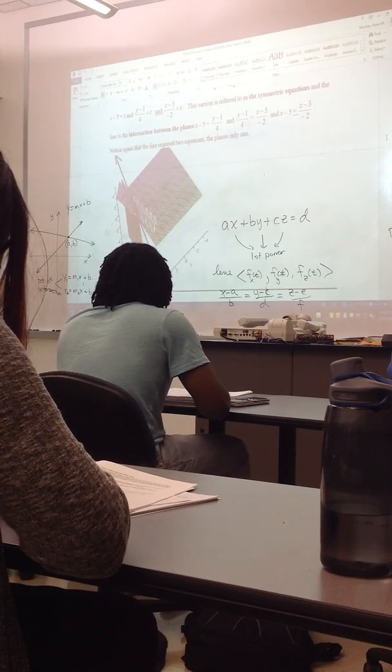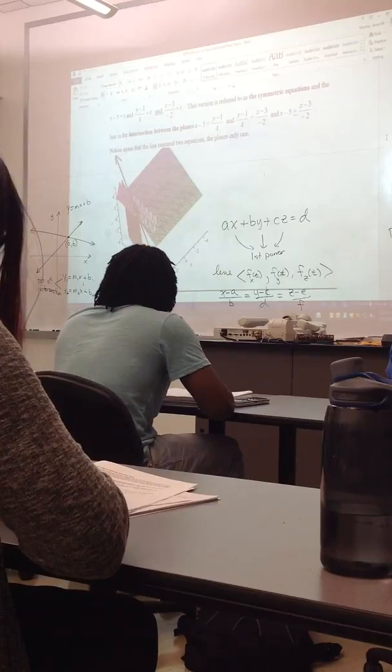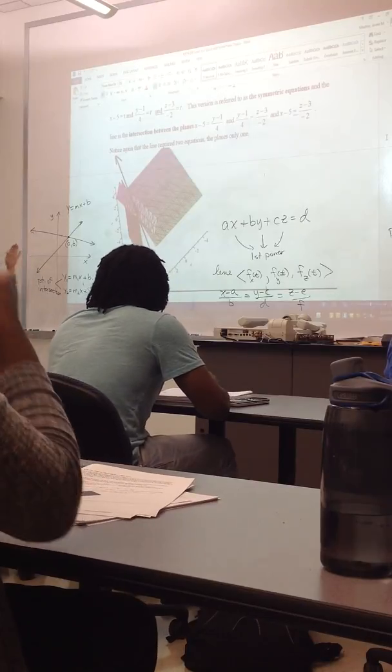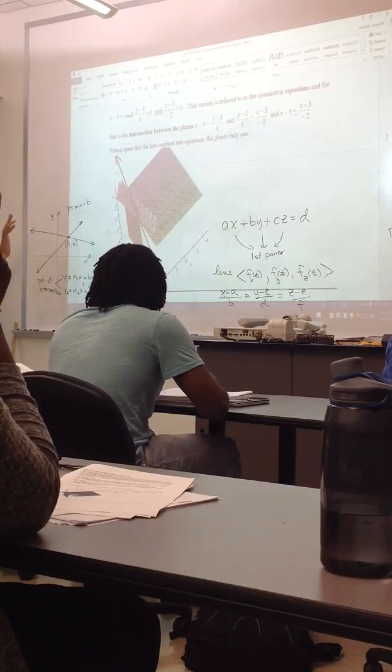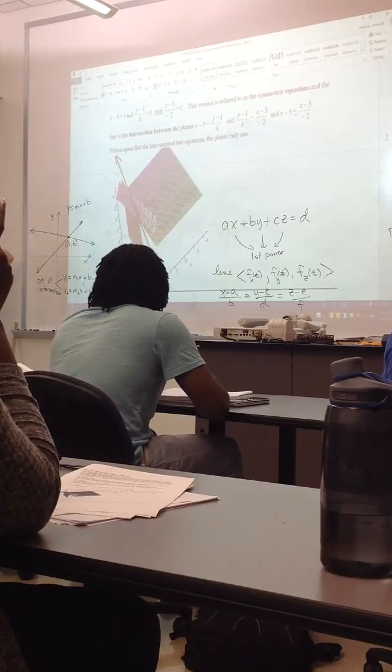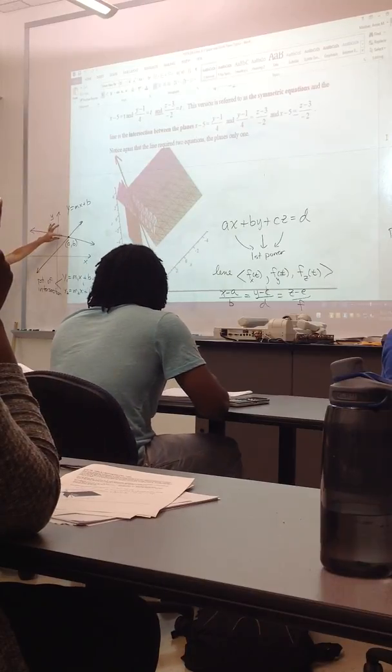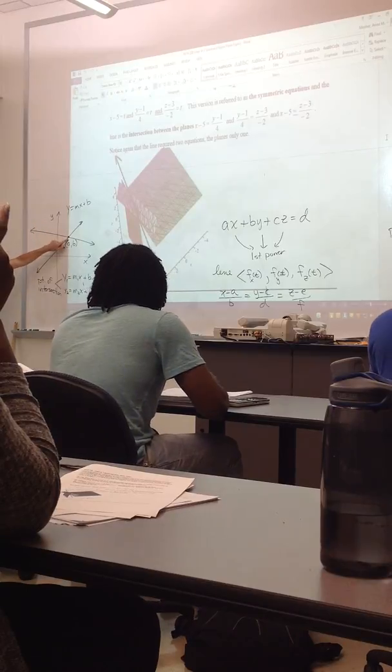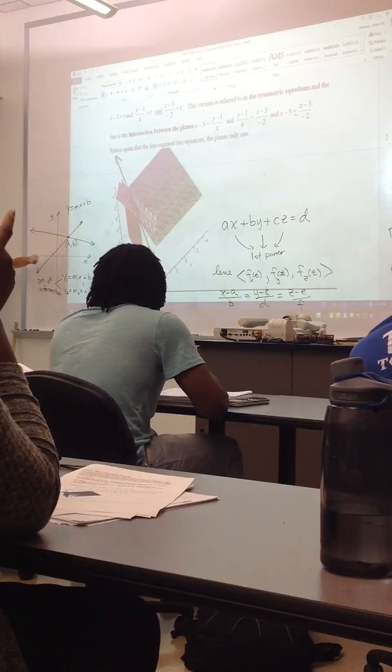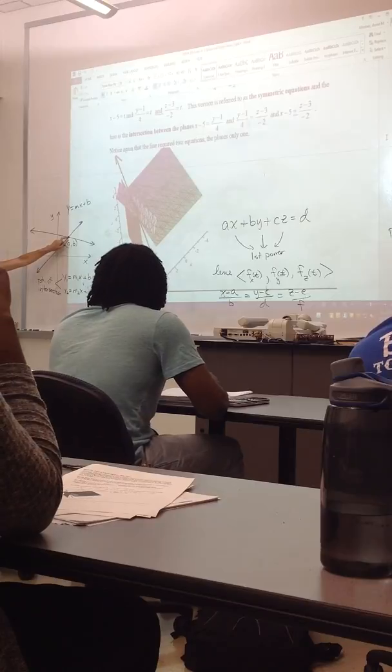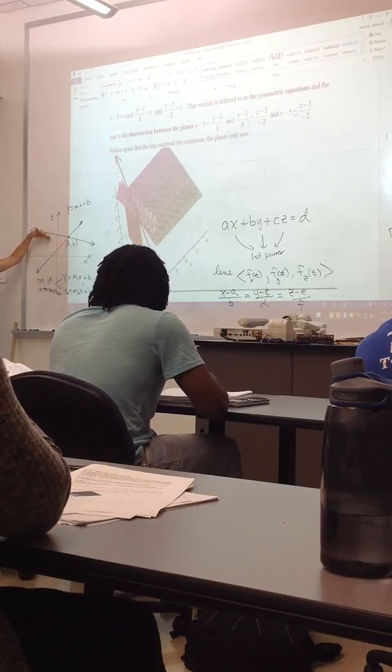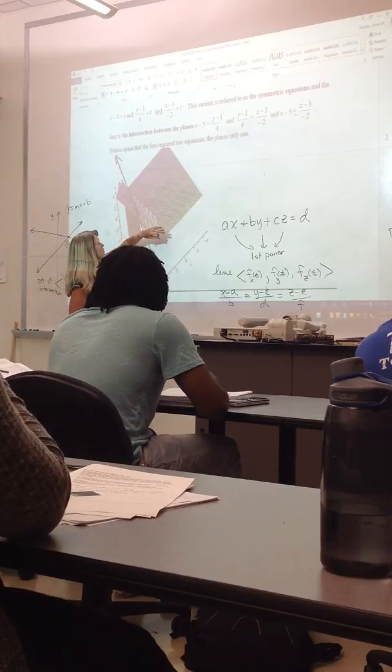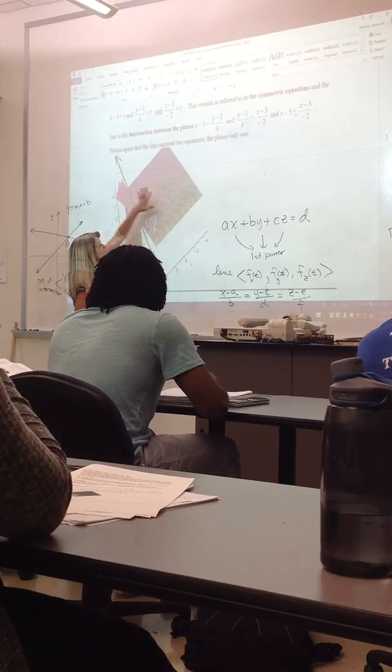In R3, if you take two planes and they do intersect, they'll form a line unless they're actually the same plane. In R2, if I find two lines and they intersect, they're going to form a point. But I need much more information to locate the single point than I do to locate a line. I need much more information to describe a line than I do a plane.